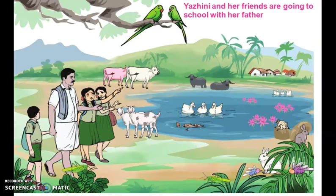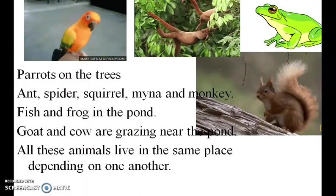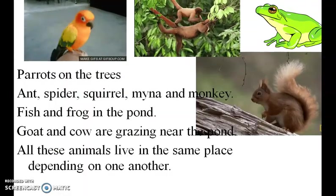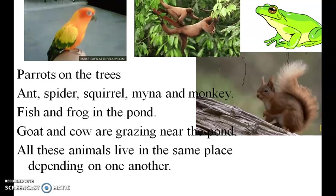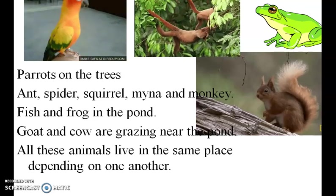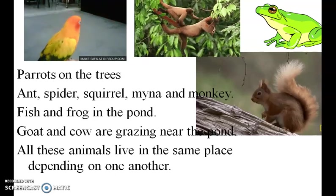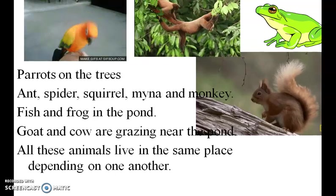Yalini and her friends are going to school with their father. On the way, they are seeing many animals, plants, and birds, and they are enjoying the nature very much. They see parrots on the trees, ant, spider, squirrel, mina and monkey, fish and frog in the pond, and goat and cow grazing near the pond. All these animals live in the same place depending on one another.